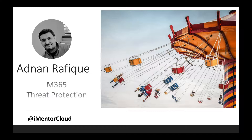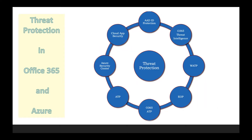What I've done is put together a chart showing all the different ways Microsoft provides threat protection across Azure and Microsoft 365. Threat protection in Office 365 and Azure includes: Azure AD, Cloud App Security, Azure Threat Protection, Office 365 Threat Protection, Exchange Online Protection, Windows ATP, and Cloud App Security.